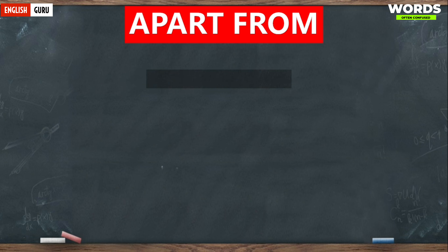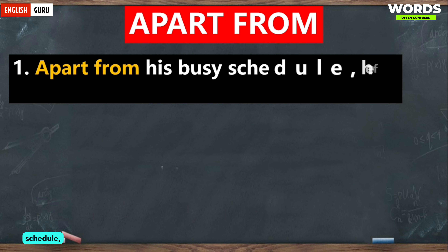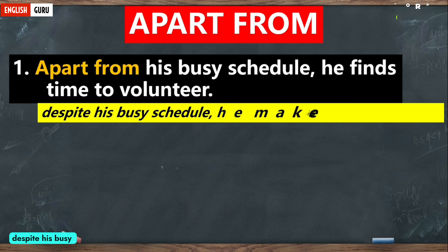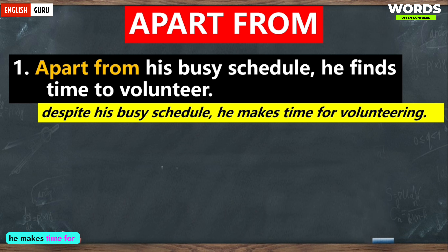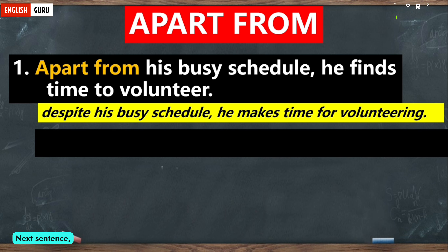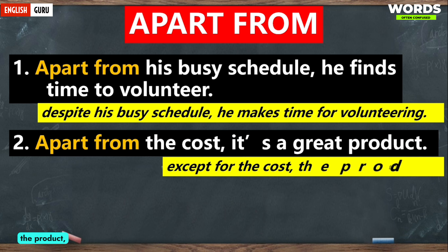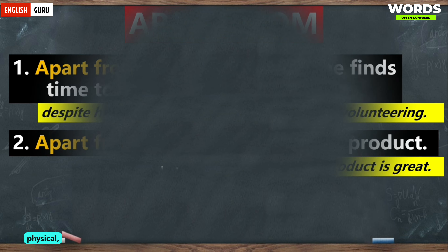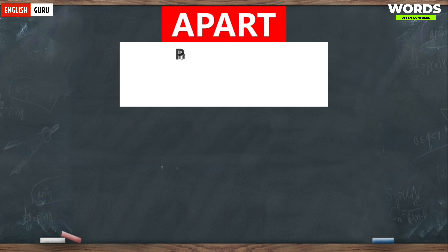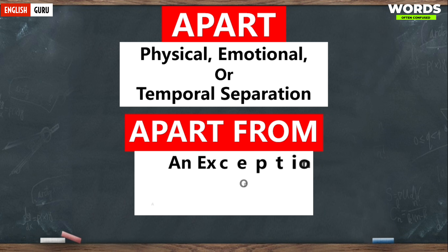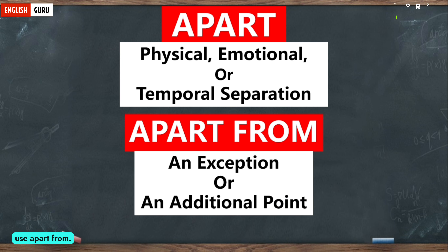More examples: 'Apart from his busy schedule, he finds time to volunteer' means that despite his busy schedule, he makes time for volunteering. 'Apart from the cost, it's a great product' means that except for the cost, the product is very great. So remember: if you are describing physical, emotional, or temporal separation, use 'apart.' Whereas if you are highlighting an exception or an additional point, use 'apart from.'